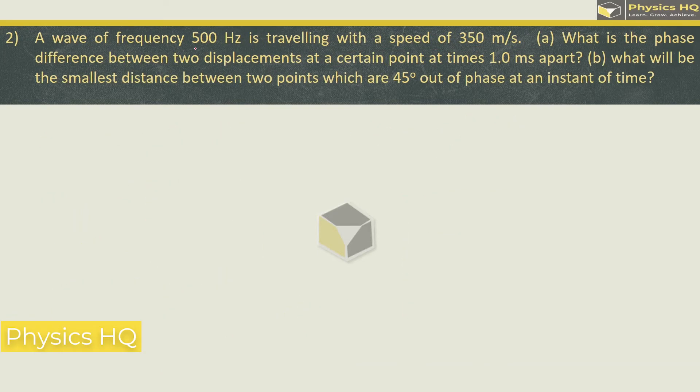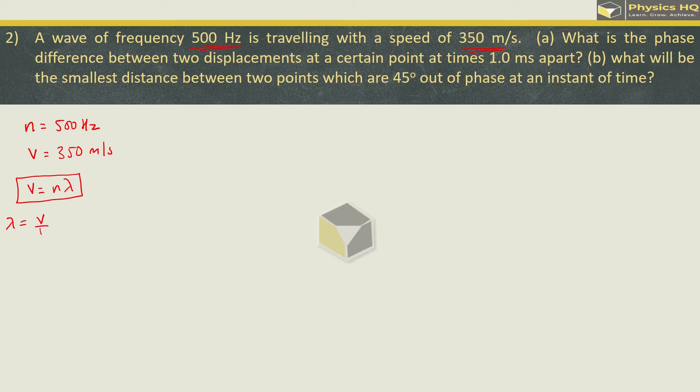Let us check out the next sum. A wave of frequency 500 Hertz is traveling with a speed of 350 meter per second. So frequency is given as 500 Hertz. Speed v is 350 meter per second. And this chapter's recursively used formula is v equals n lambda. So wavelength lambda is v by n, which is 350 by 500, which is 7 by 10, and you can say lambda is 0.7 meter.